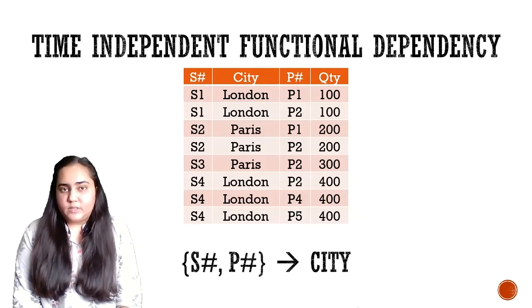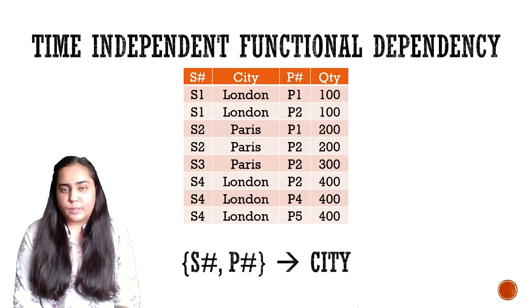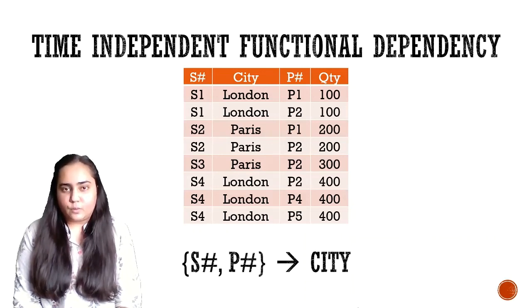Finally, there is a time-independent functional dependency: S# P# determines city. If you take any combination of S# and P# and find the city, it gives one unique city — a many-to-one relationship. It is time independent because the supplier is not likely to change location within an hour the way quantity might change. That's it for this video — I'll see you in the next one. Thank you for watching.